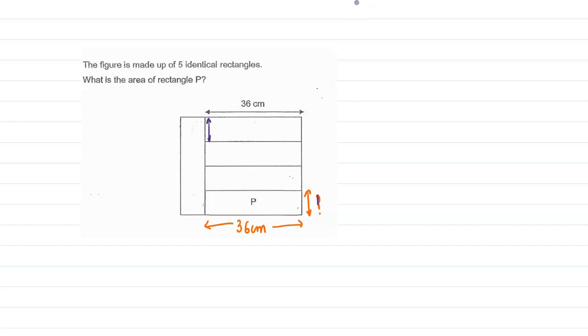We can name the other side as breadth B. So this is B, this is also B, this is also B, and this is also B. We can also see that this side is the length of the rectangle, that is 36 centimeters. So we can say that 4 times B should be equal to 36.